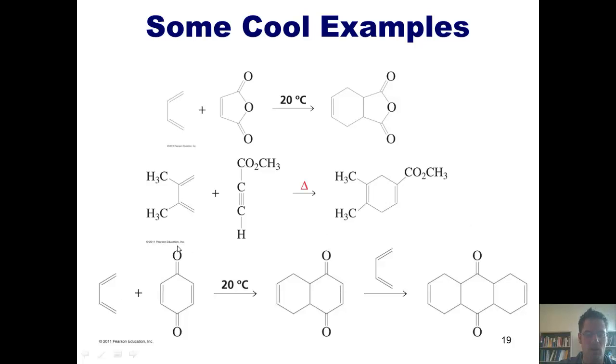If I take butadiene and react it with this molecule, which actually has two alkenes in it, I can get a Diels-Alder reaction occurring on the left side to give me this product. And then if I introduce an excess amount of my butadiene, it will do a second Diels-Alder reaction to the right side of this intermediate to give me this final product.